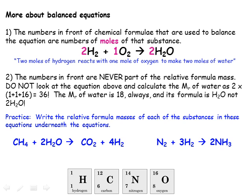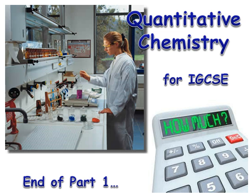Just for practice, write the relative formula mass of each of the reactants and products in these two chemical equations. Pause the video whilst you do this. Now check you got the relative formula masses correct and didn't multiply by any of the numbers for balancing the equation. Now we have all the tools we need to be able to calculate reacting quantities, which is what we'll explore in part 2.